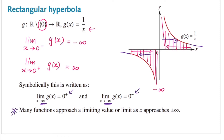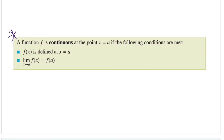Many functions approach a limiting value or limit as x approaches positive or negative infinity. Now let's look at the rules. A function f is continuous at point x equals a if the following conditions are met. First condition: the function f(x) is defined at x equals a — that means the graph needs to show a closed dot when x equals a. The second condition: the limit as x approaches a for f(x) needs to be the same as the function when x equals a, meaning the value approached from the left and right must be the same for the function to be continuous.